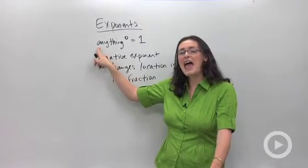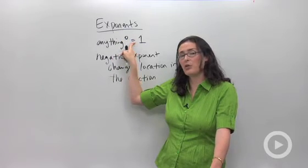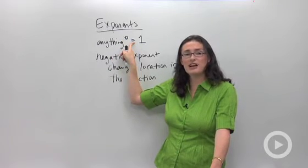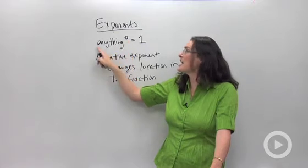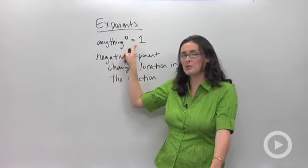First thing, anything with a zero exponent is equal to one. It doesn't matter if there's numbers, letters, negative, positive, whatever. Any base to the zero exponent equals one.